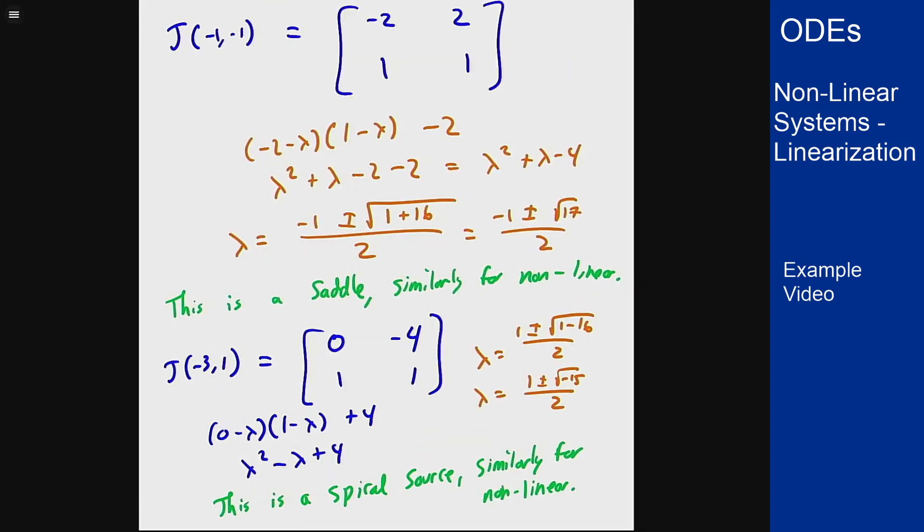That's the idea of how we can find and classify equilibrium solutions for a nonlinear system where we can factor the expression, take the Jacobian of the system to find a matrix, and then plug in the values of our points to give us what these linear systems look like around each of these equilibrium solutions.